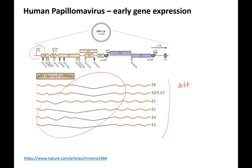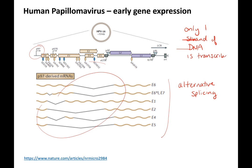HPV uses alternative splicing to generate different proteins — this diagram is from a paper discussing this in detail. Another interesting feature is that only one strand of the DNA is transcribed. All the genes are encoded on one strand of this double-stranded virus. The circular genome is called an episome.